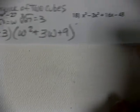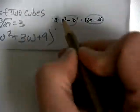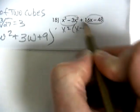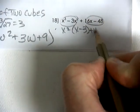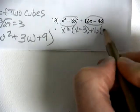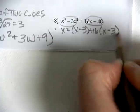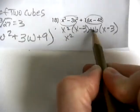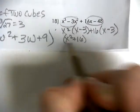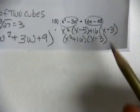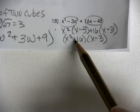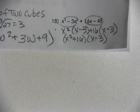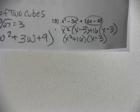The last question uses factor by grouping. That gives us x squared, which leaves x and 3. Bring down your sign, then factor out 16: 16 times x and 16 times 3. Your final answer is (x squared plus 16)(x minus 3). You do have to be careful — if this were x squared minus 16, we could factor it further, because we'd need to break that difference of two squares apart also. And there are our factoring examples.